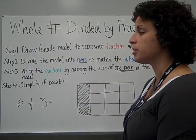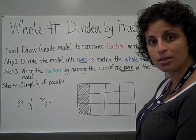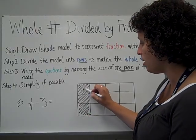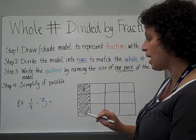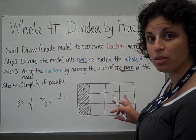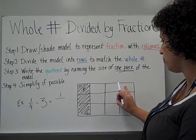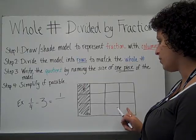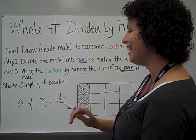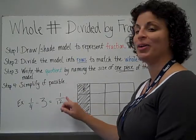And then our quotient is going to be to name the size of one piece of the model. And so here is my 1 fourth. If I get one of those pieces, I am getting one out of how many, though, because the model has been cut into more pieces than just 4ths. So it's 1, 2, 3, 4, 5, 6, 7, 8, 9, 10, 11, 12. So I've got 1 fourth divided by 3, which is equal to 1 twelfth.